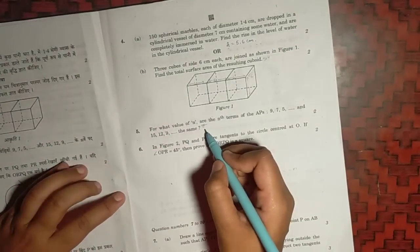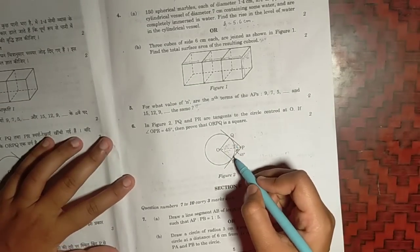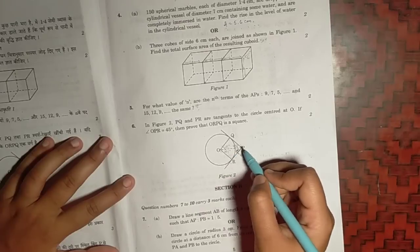The fifth question, the answer will be n equals to 7. The sixth question, we have to prove this is a square. So we will prove all the sides are equal, and we have to prove that all the sides are 90 degree.